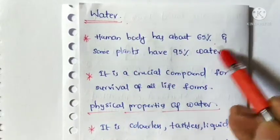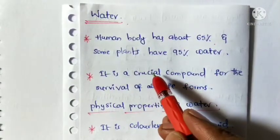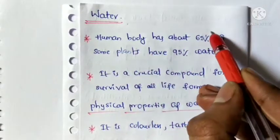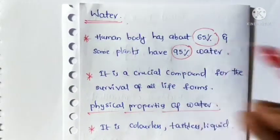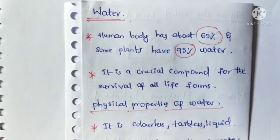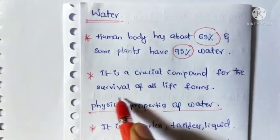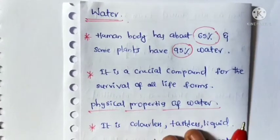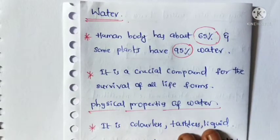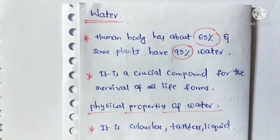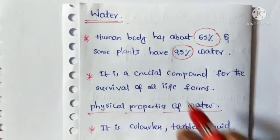The human body has about 65% water, and some plants have 95% water. Water is a crucial compound for the survival of all life forms and all living beings.